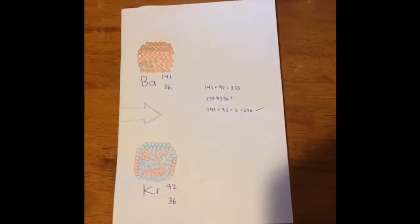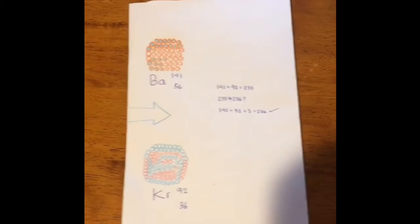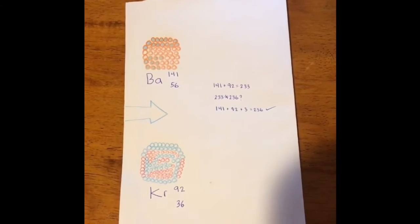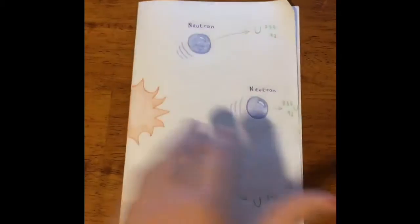As you can see, their mass numbers only sum to 233. And because mass must be conserved, they must somehow sum to 236. So in addition, three neutrons are also emitted, along with massive amounts of energy.